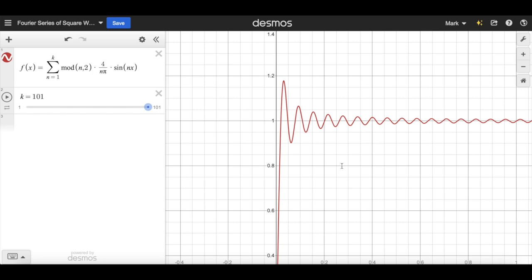And theoretically, if we were to have an infinite sum, if the upper bound was infinite, then we would have a perfect square wave shape. And this is the true magic of the Fourier series. You can take any strange, hard to understand waveform and turn it into a sum of sines and cosines.